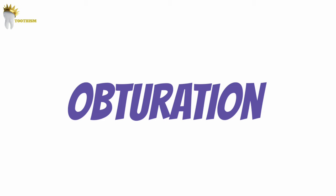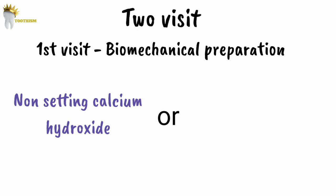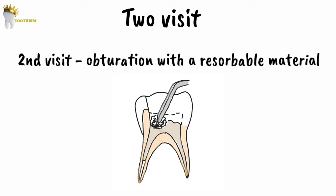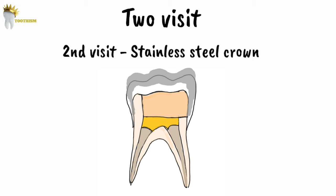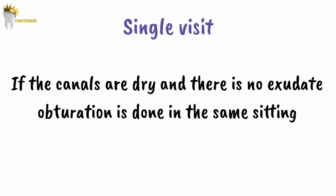The next step is obturation. If the root canals are not to be obturated at the same visit, we can place a dressing of non-setting calcium hydroxide, or the canals can be left empty and the tooth restored with a small cotton wool pellet and an interim intracoronal restoration. At the next visit, root canals can be obturated with a resorbable root filling material such as zinc oxide eugenol. After canal debridement, the canals are flushed again with sodium hypochlorite and dried with sterile pre-measured paper points. If the canals are dry and there is no exudate, obturation is performed in the same session.